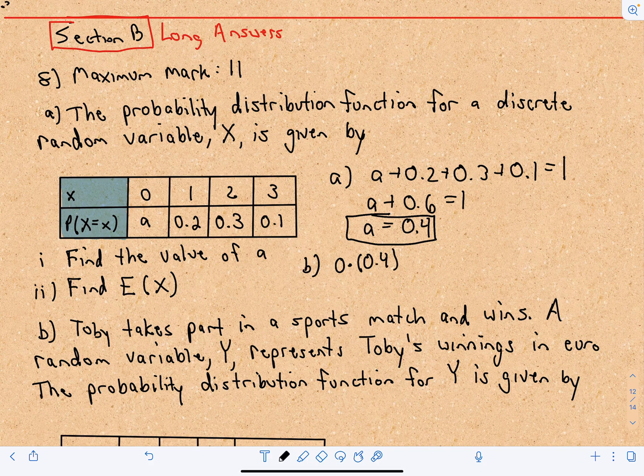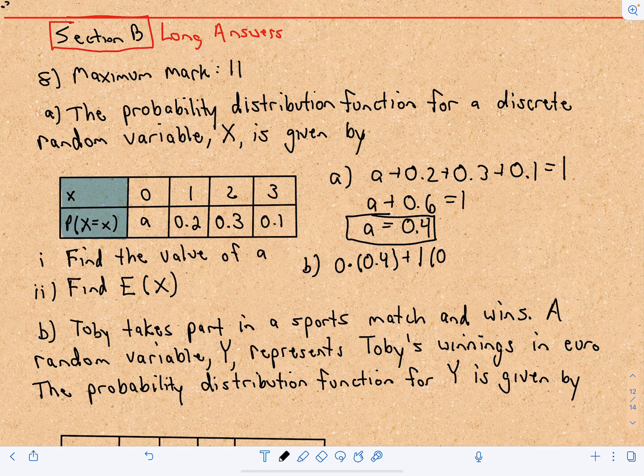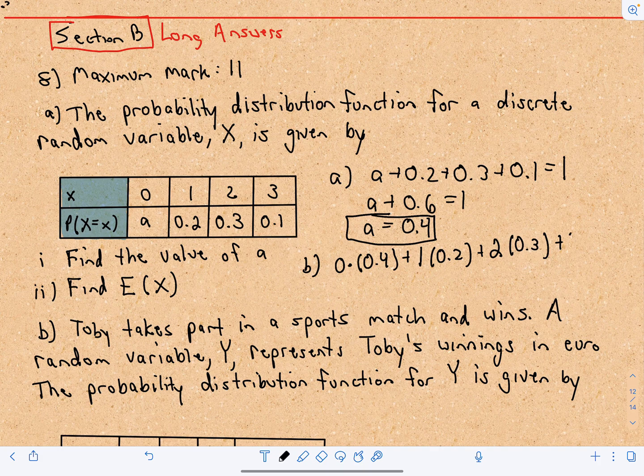The value 0 can occur with a probability of 0.4, that's what we just found, plus the value of 1 can happen with a probability of 0.2, 2 can happen with a probability of 0.3, and 3 can happen with a probability of 0.1.